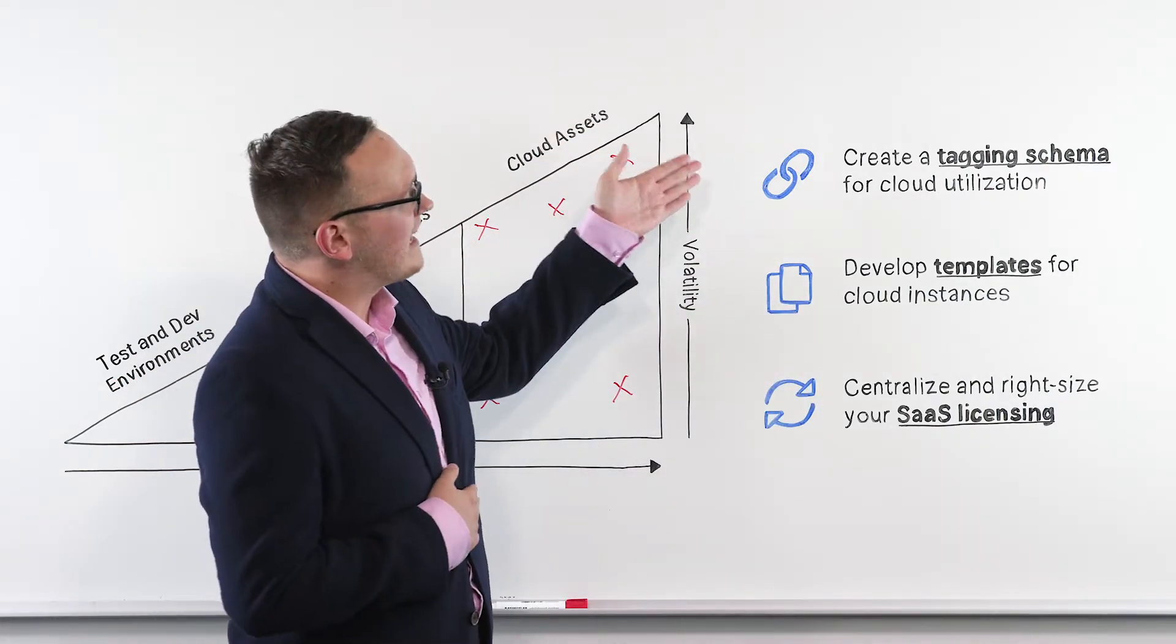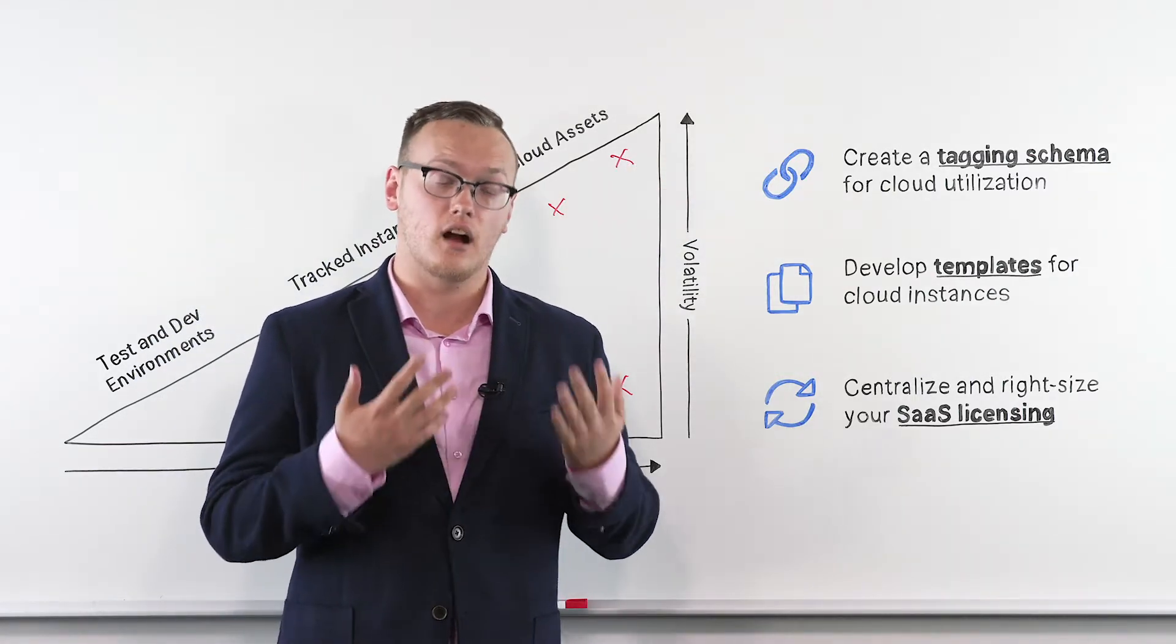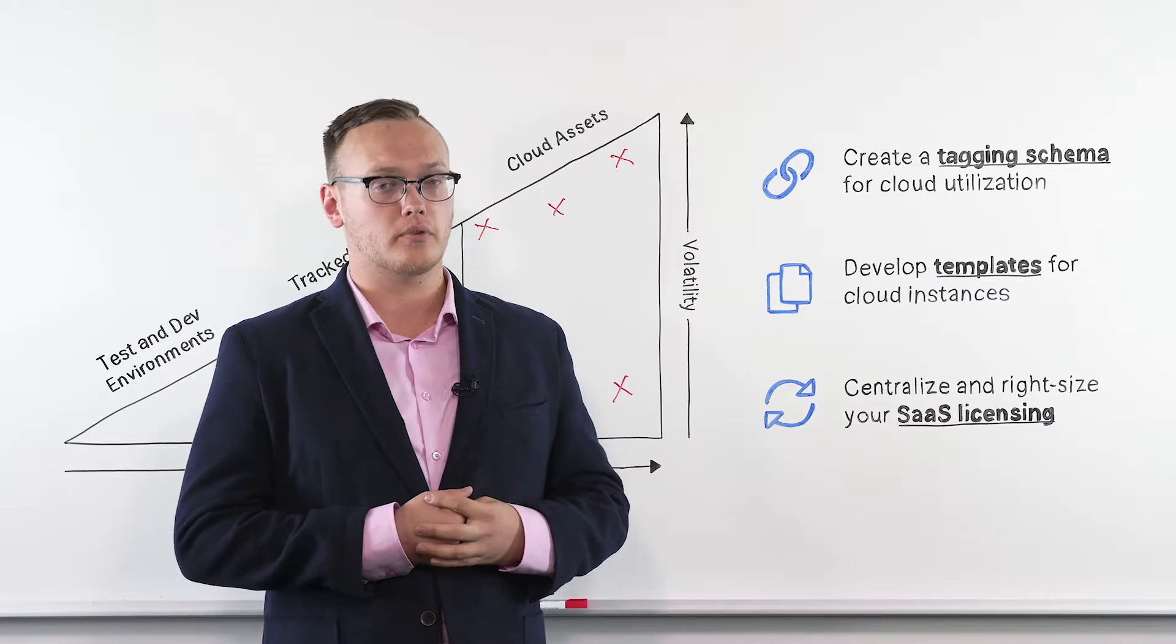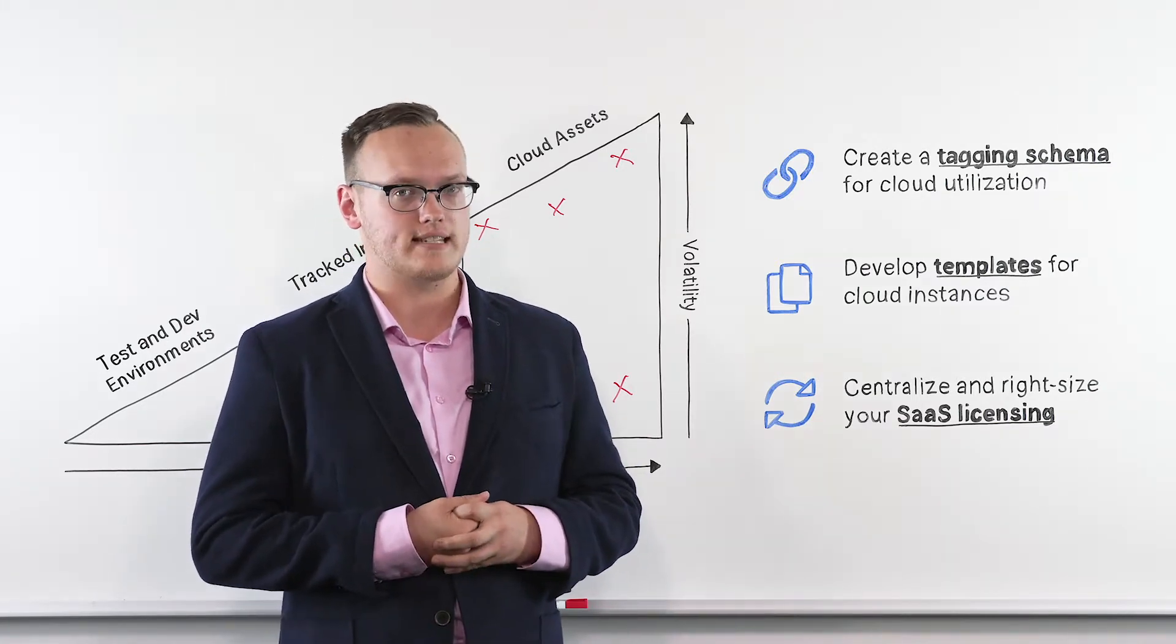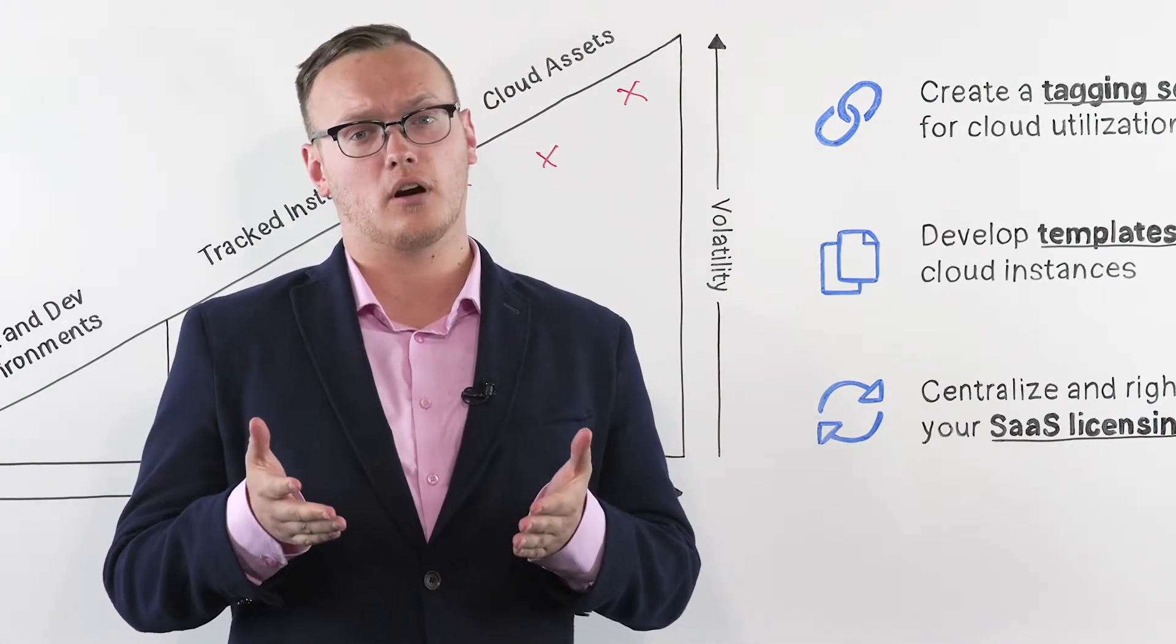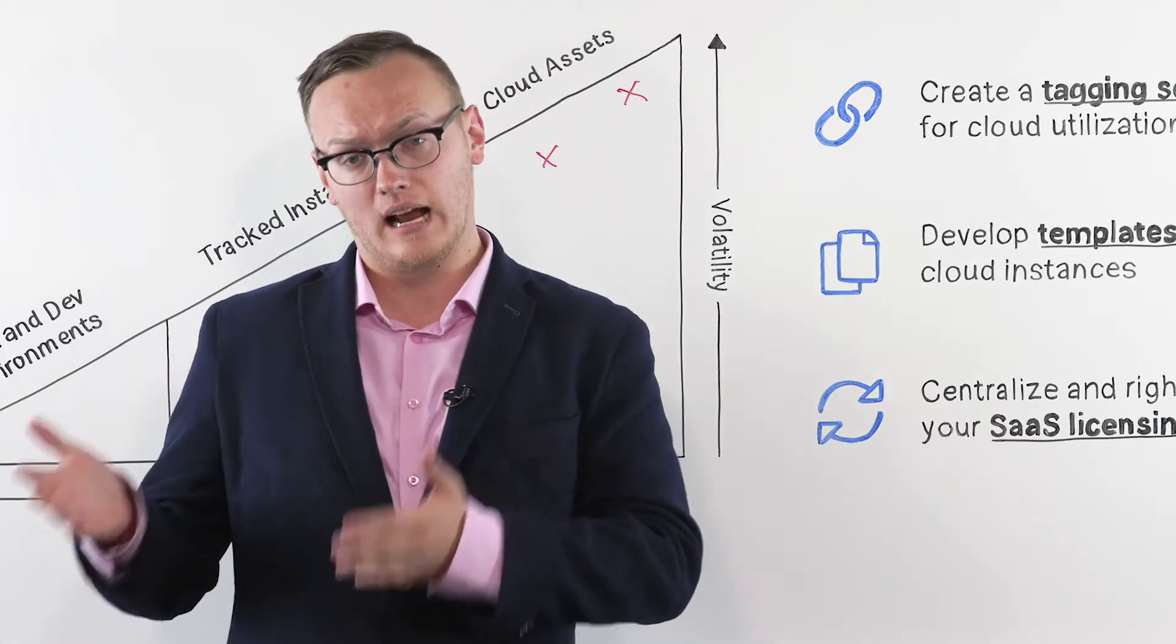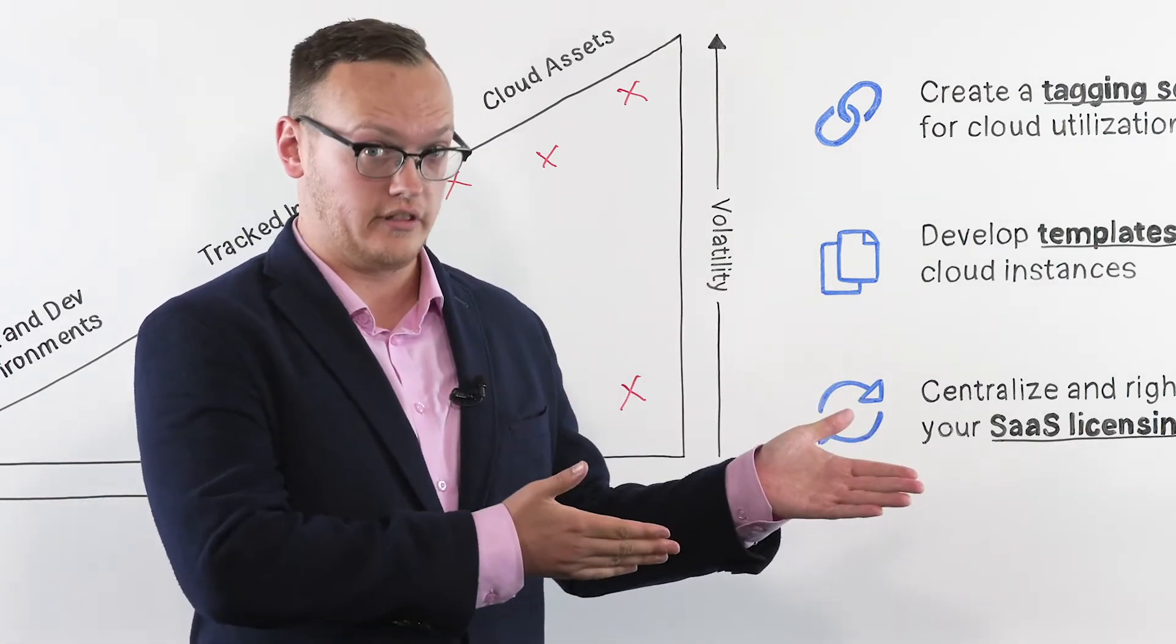For a tagging schema, we normally recommend starting off with the different cost centers that already exist or with different projects in your portfolio or with different departments for the organization. The intention here is to help the finance department better associate those cloud utilization costs with why those costs were incurred in the first place.